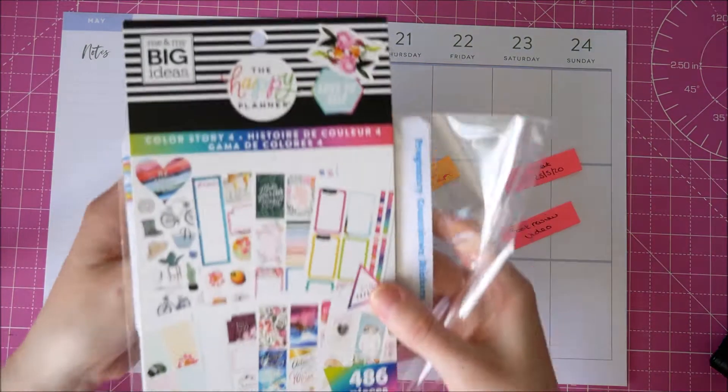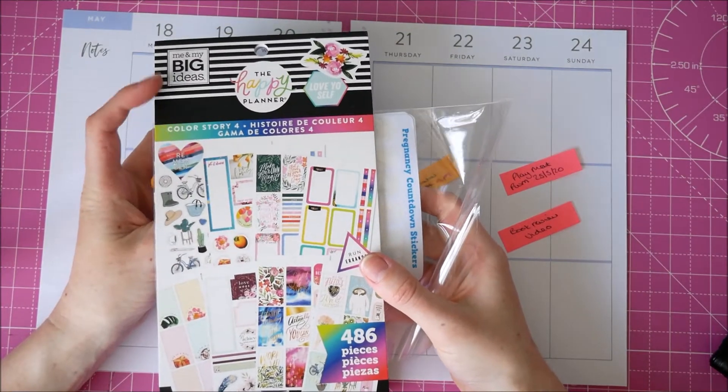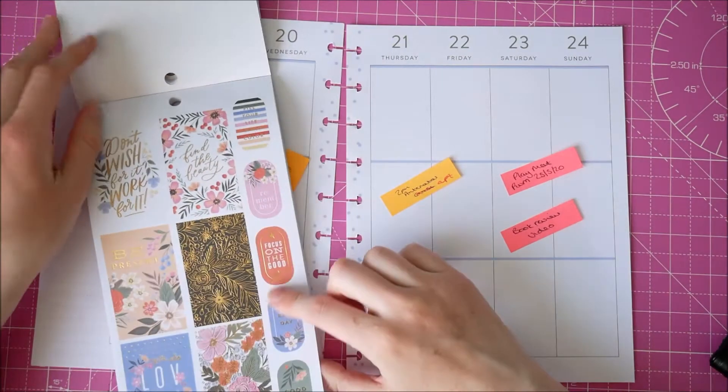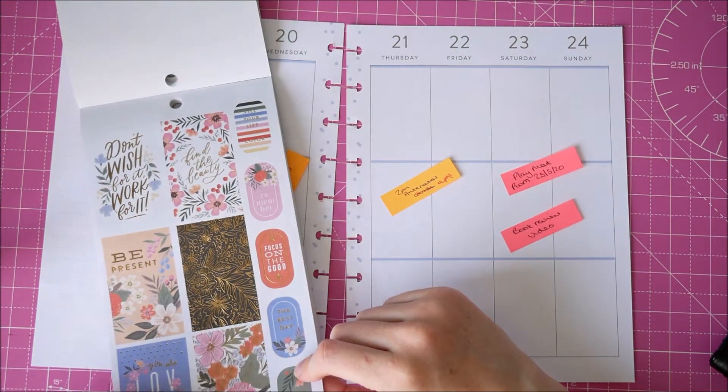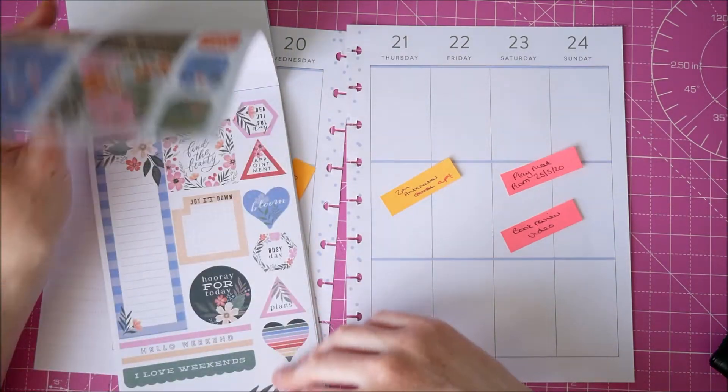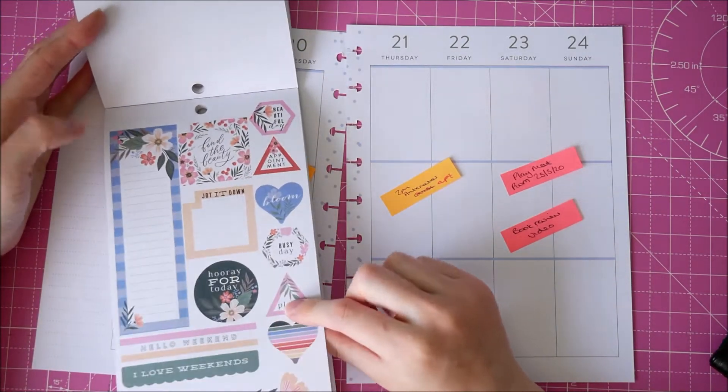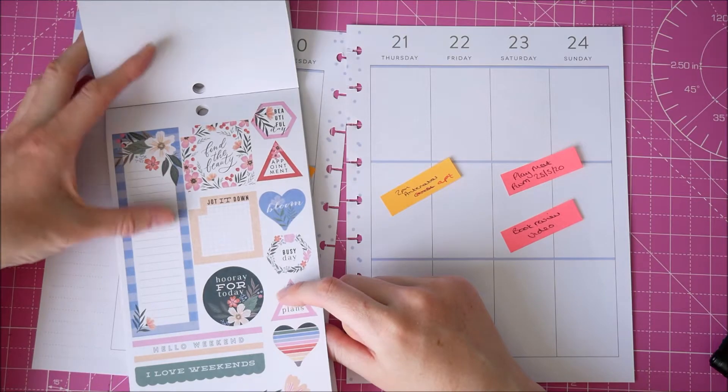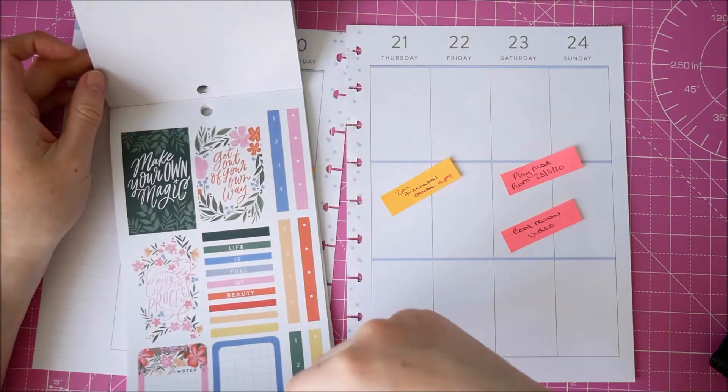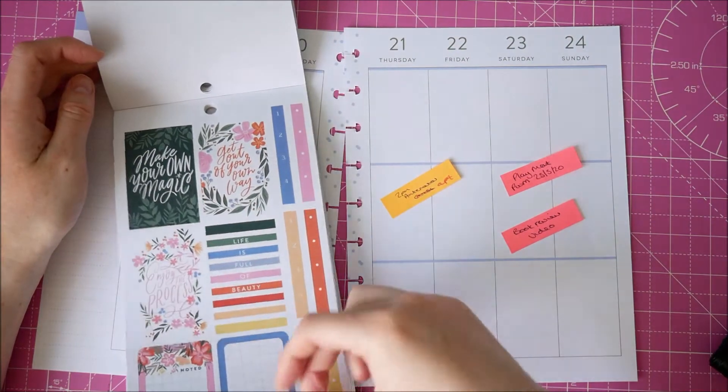And then the stickers that I'm going to use are Colour Story 4 from the Colour Story 4 Mamby sticker book. And they are these kind of floral stickers, some with quotes on and some just kind of like florals, and then they have a set. So there's some box stickers that I can use to write on as well that kind of go with the colorway.